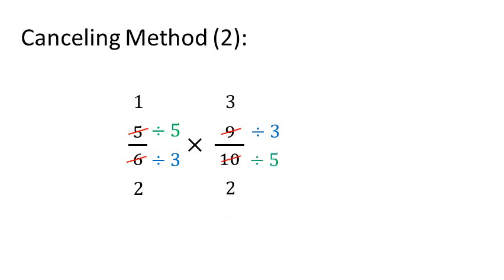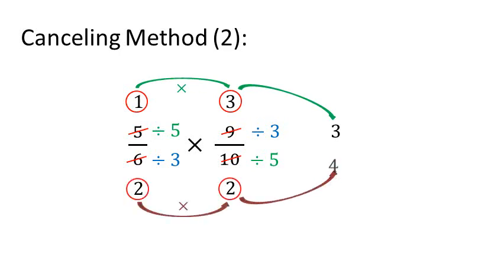Now multiply the numerators, 1 and 3, to get 3, and the denominators, 2 and 2, to get 4. So the answer is 3 over 4.